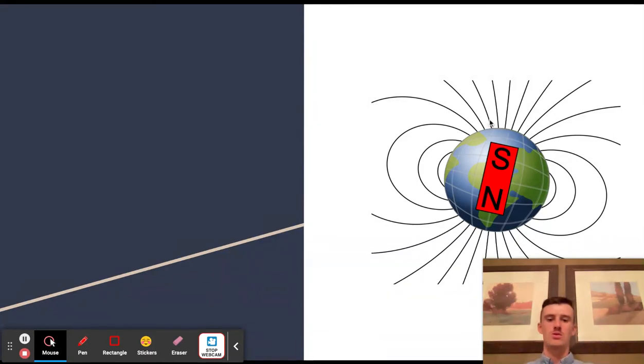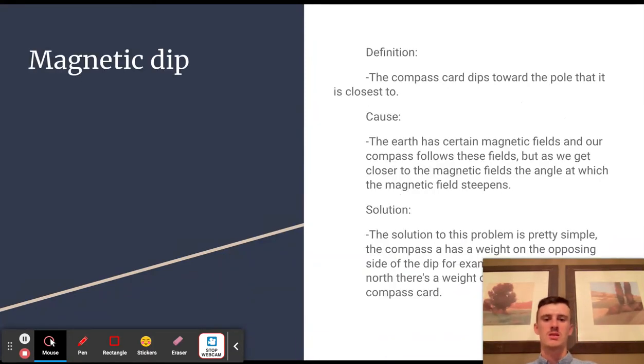In order to adjust this, we take a weight and put it on the opposite side. In the northern hemisphere, since it dips towards the north, we're going to put that on the south side or the south part of the actual compass.